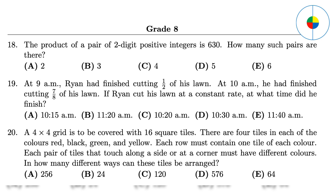Question 19: Assume the lawn is 1 square meter. How much did Ryan cut from 9 a.m. to 10 a.m.? It's 3 over 8, during 60 minutes. There is still 1 eighth left, and it will take another 20 minutes. So the answer is C.